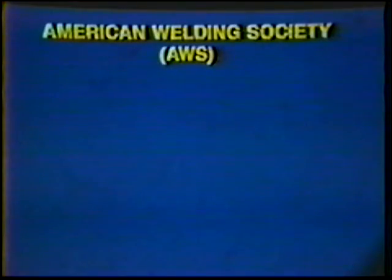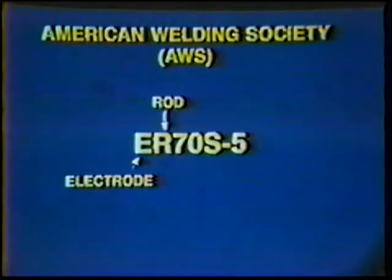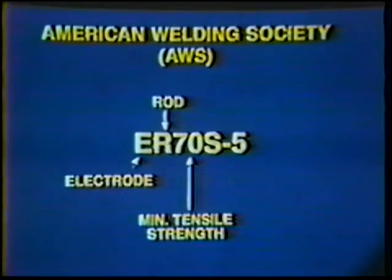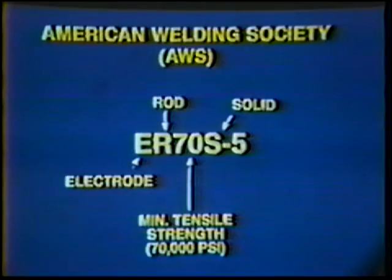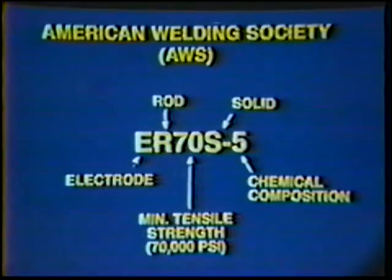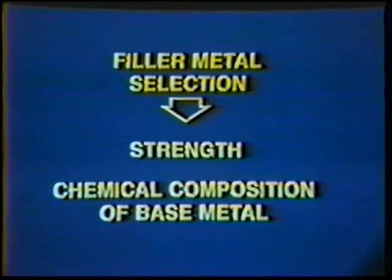Filler metals for welding carbon steel are also identified with a classification system. The American Welding Society classifies filler metals by using a series of letters and numbers. A typical classification is ER70S5. The ER indicates an electrode or rod. The 70 indicates a minimum tensile strength of 70,000 pounds per square inch after it is deposited. The S indicates a solid electrode or rod, and the last number is a suffix indicating chemical composition. Selection of filler metals for the gas tungsten arc process is based on matching the strength and chemical composition of the base metal.